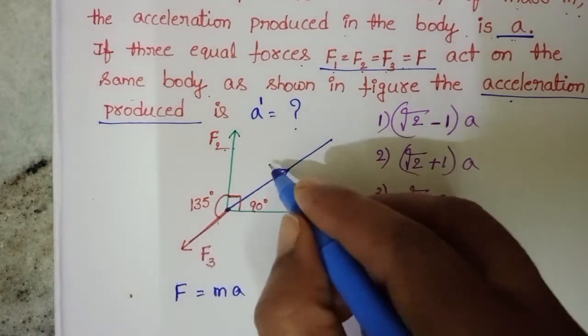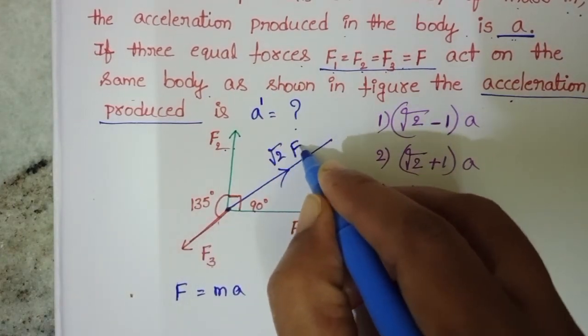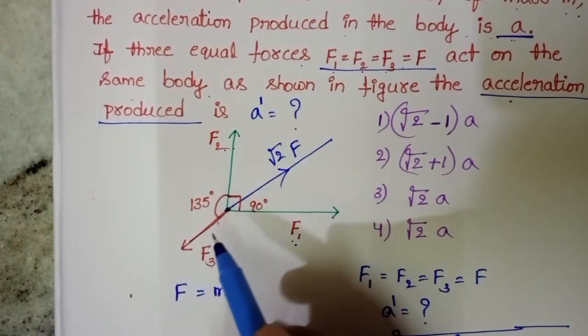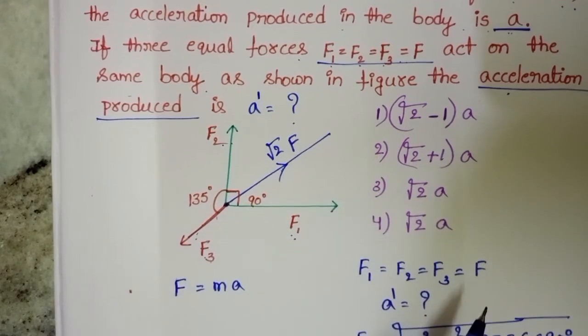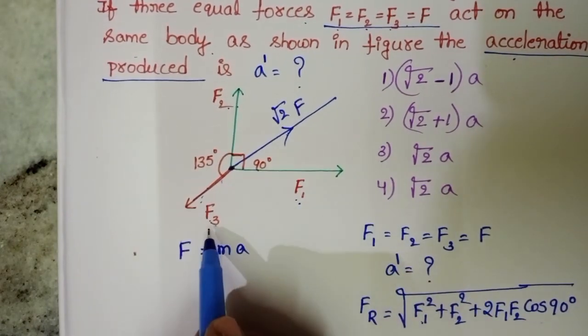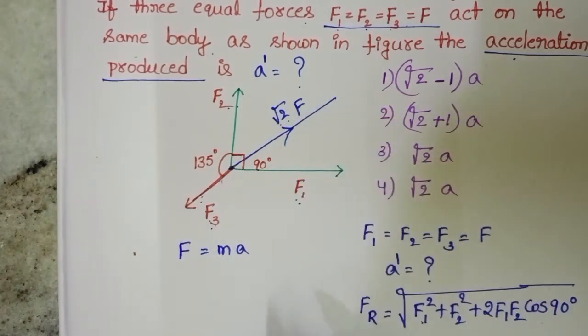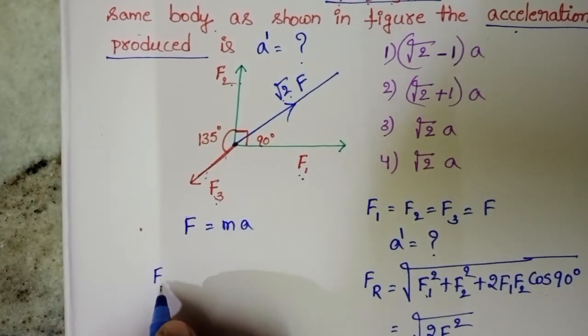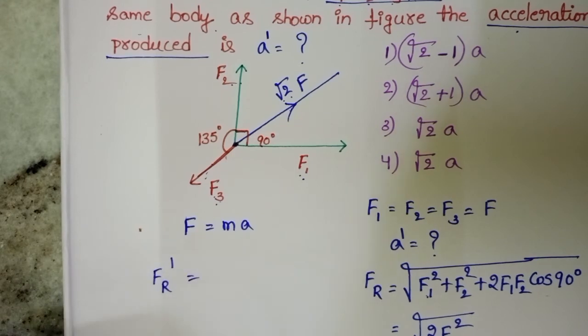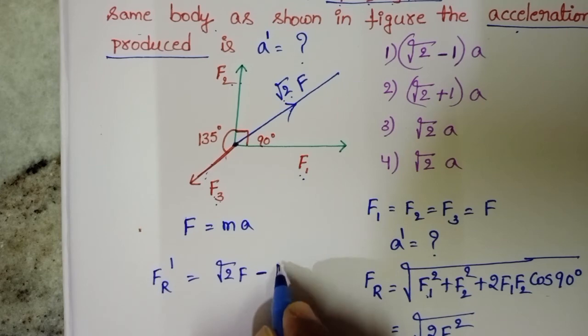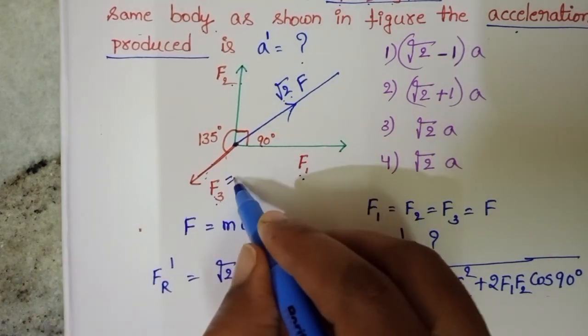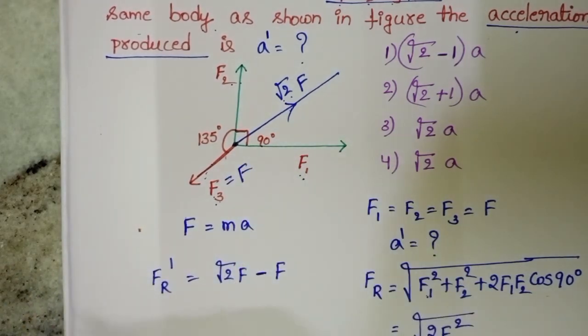This resultant force is opposite to the direction of F3. These two forces act in opposite directions. So the resultant force of F3 and root 2 F is F dash equals root 2 F minus F. Why? Because F3 also equals F.